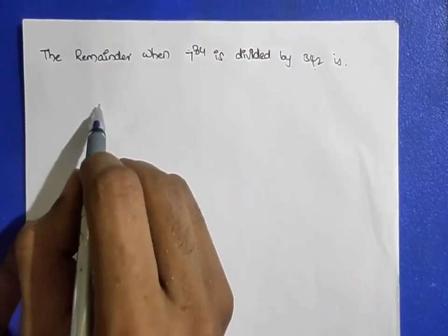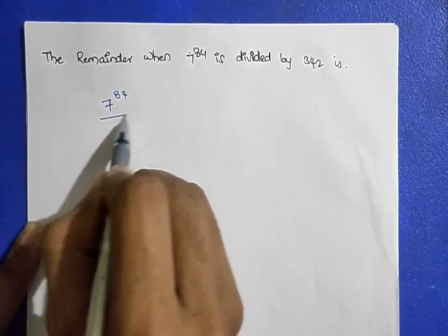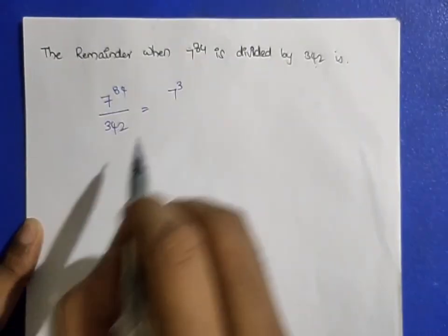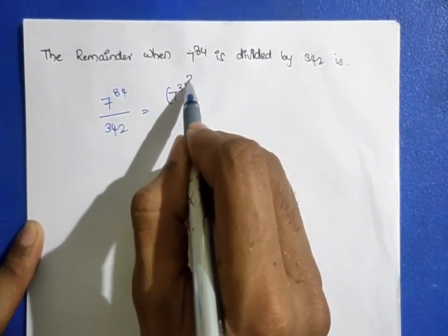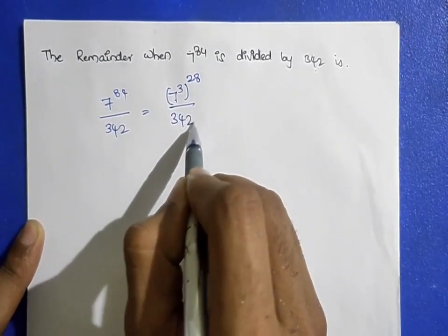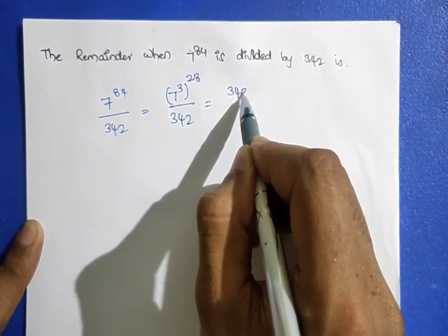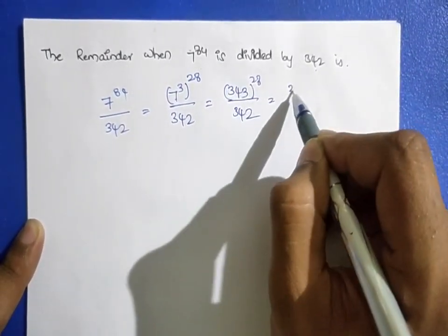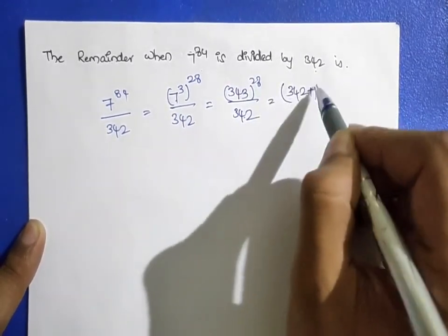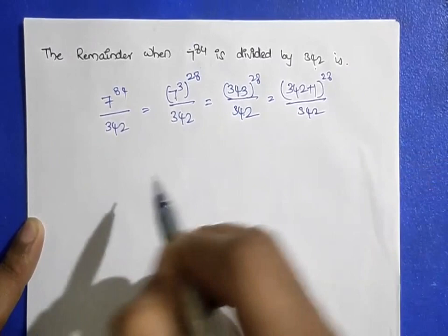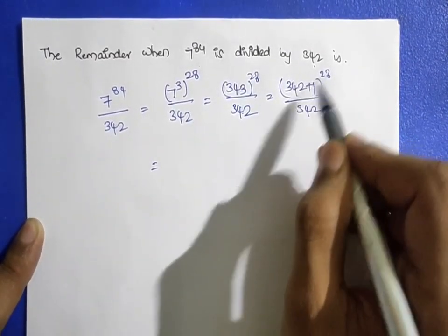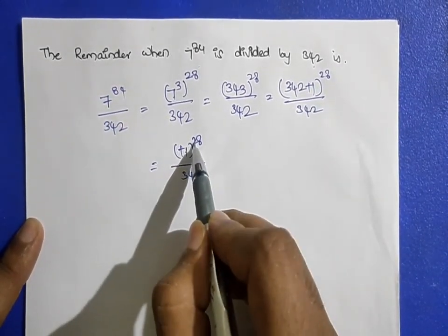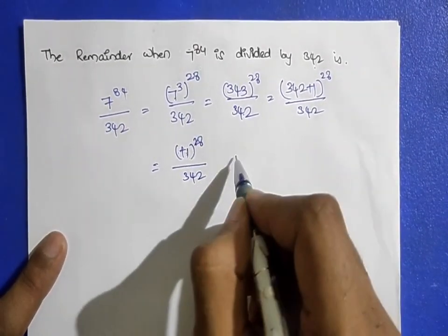Next: 7 power 84 is divided by 342. Notice 7^3 = 343 = 342 + 1. So rewrite 7^84 = (7^3)^28 = 343^28 = (342 + 1)^28, divided by 342. This gives (+1)^28 = 1. So the remainder is 1.